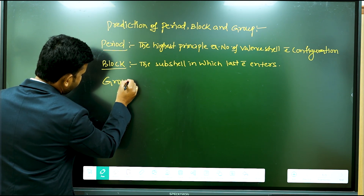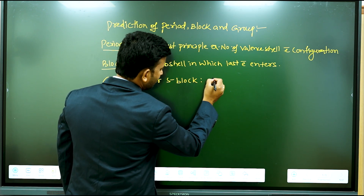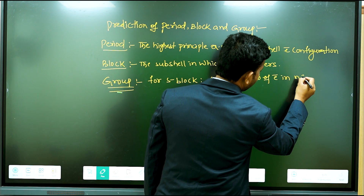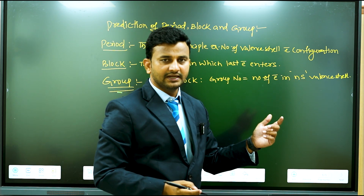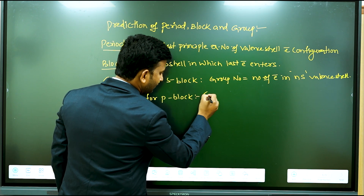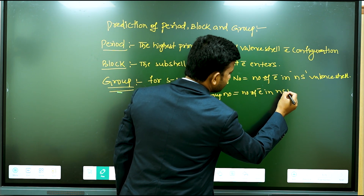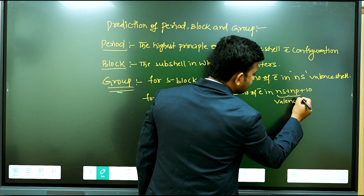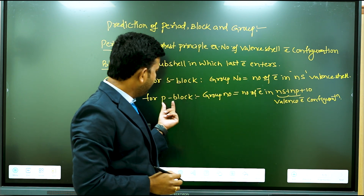Group. For S block, group number is equal to the number of electrons in ns. For P block, group number is equal to the number of electrons in ns plus np, plus 10.